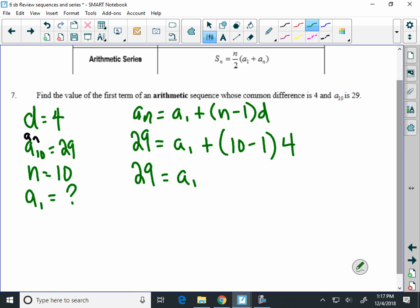29 equals a sub 1 plus 9 times 4. Well 9 times 4 is 36. So 29 equals a sub 1 plus 36.